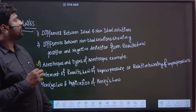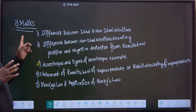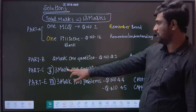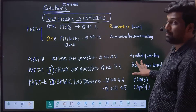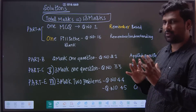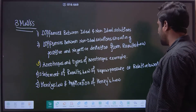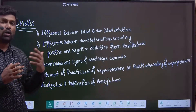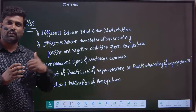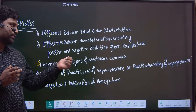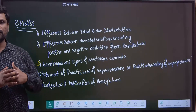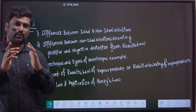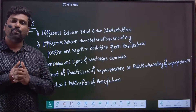The next part is Part C — three marks. One question, question number 33. This will be a remember-based question, and it is easy to answer. The question will be on: differences between ideal and non-ideal solutions, or three differences for non-ideal solutions showing positive deviation from Raoult's law, or types of azeotropes — minimum boiling azeotrope and maximum boiling azeotrope with examples. Also, the statement of Raoult's law of vapor pressure with mathematical expression and relative lowering of vapor pressure.